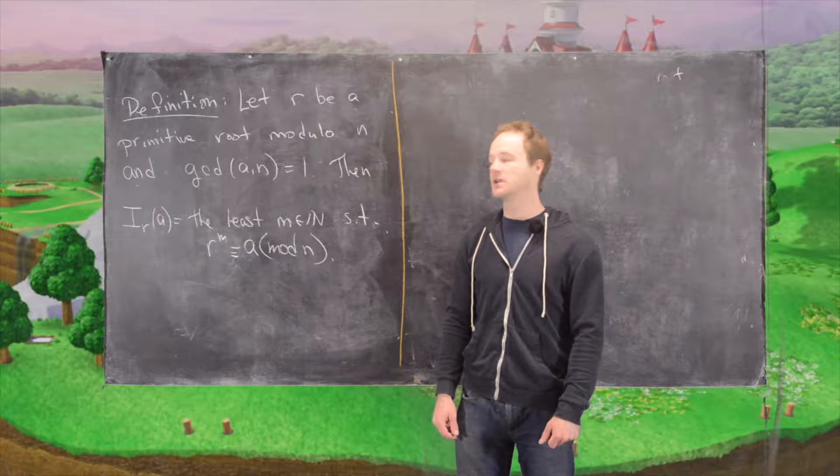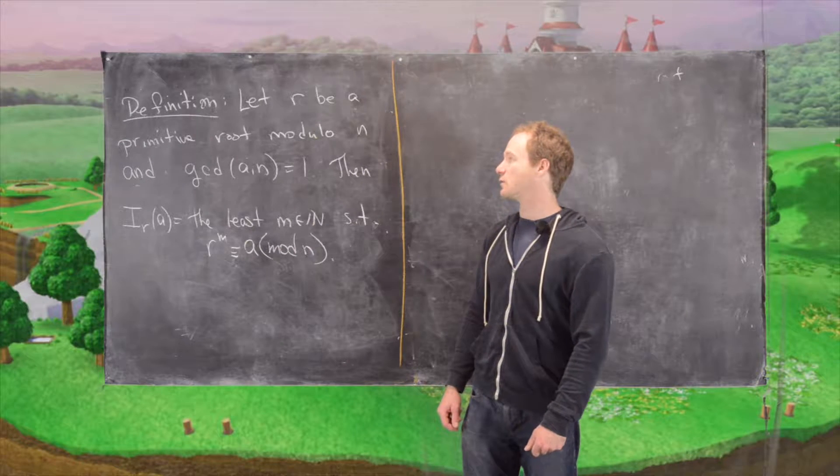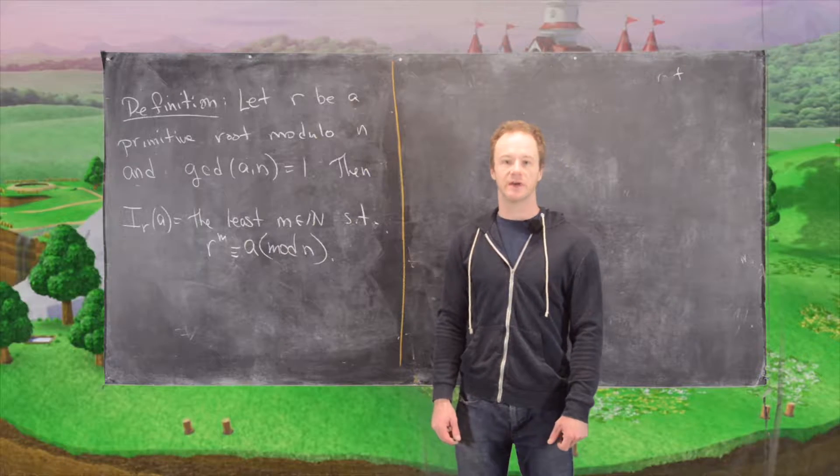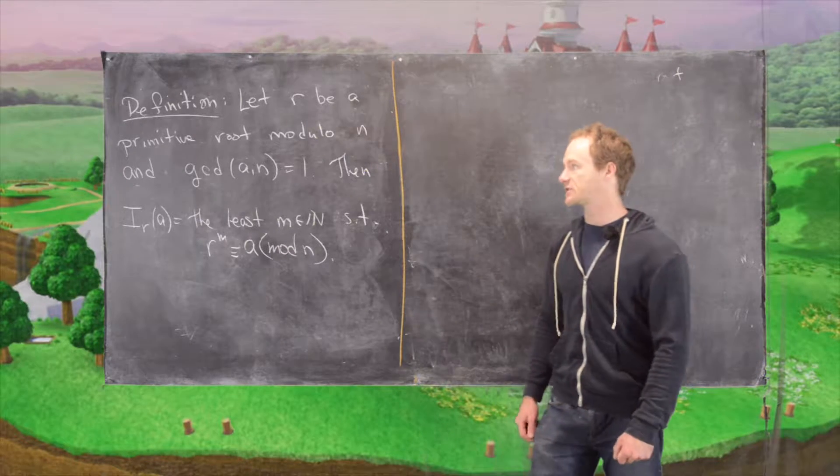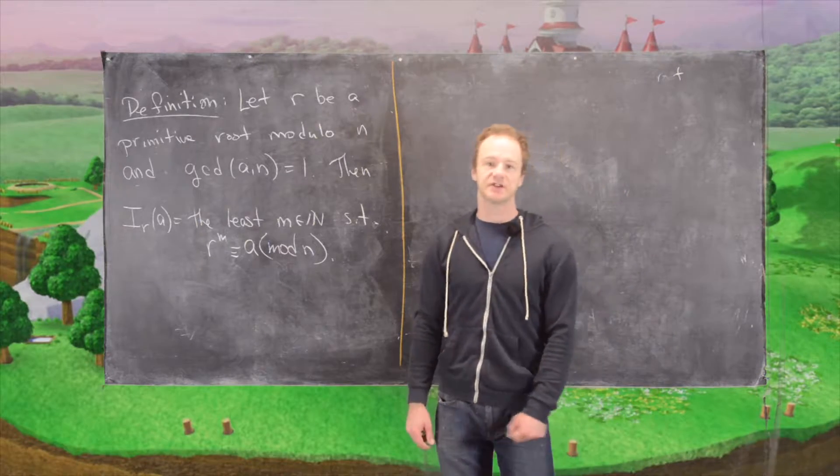Okay, in this video we're going to look at the notion of an index with respect to a primitive root modulo n. Sometimes this is called the discrete logarithm. So the definition is as follows.